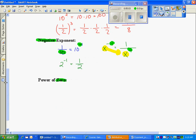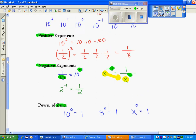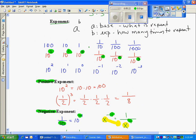And lastly, the power of zero. From our pattern, ten to the zero power is one, and so we're going to use that as a definition. Three to the zero power is one. Anything, whatever number you want, to the zero power will always be one.